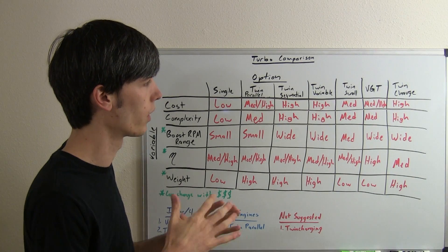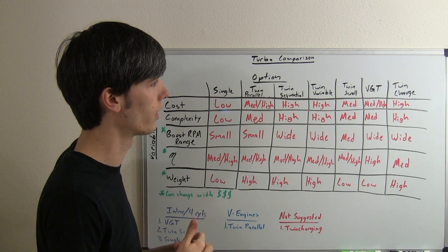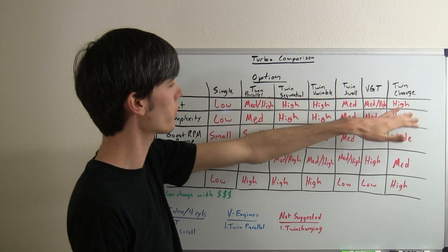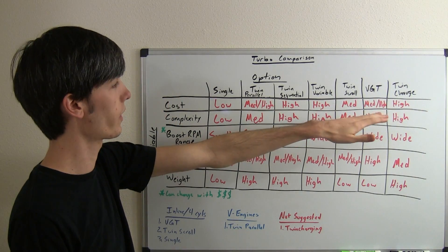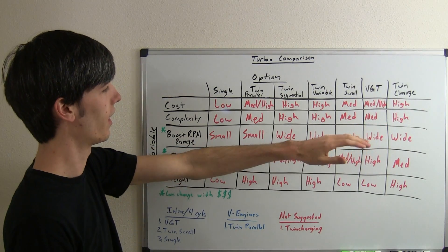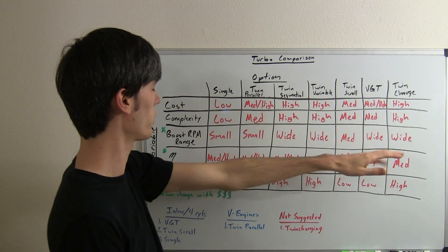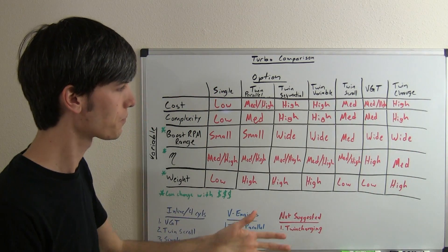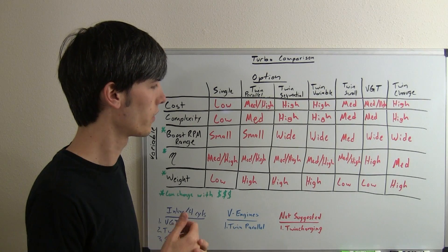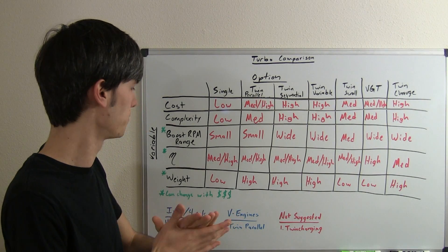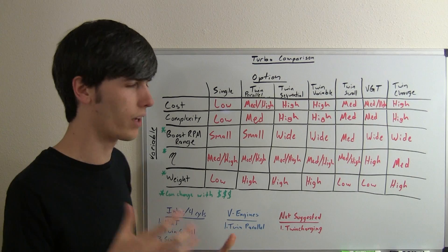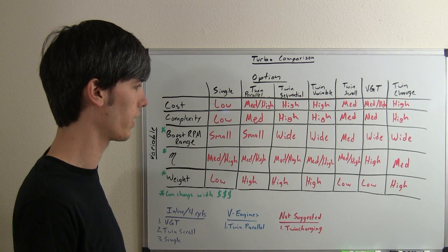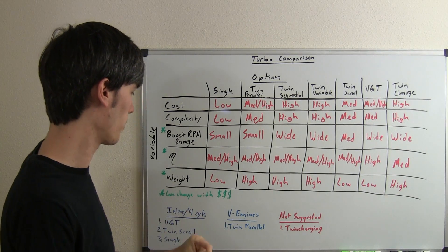And I threw in twin charge, so a combination of a turbocharger and a supercharger. It's going to be an expensive option, a complex option. You will have a wide RPM range, but superchargers aren't quite as efficient as turbochargers, so it's going to have a little bit of sacrifice there. And then the weight of course is going to be high. You've got a supercharger and a turbocharger and all the piping to connect everything. Some valves in there, so not the greatest option.